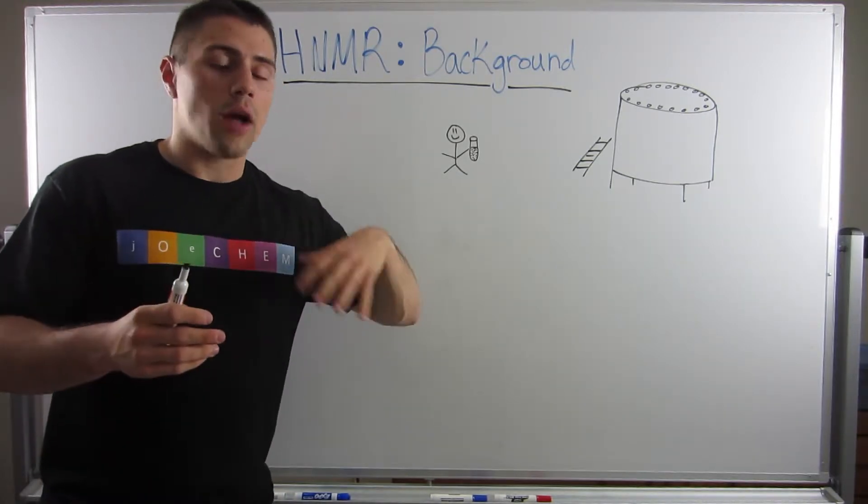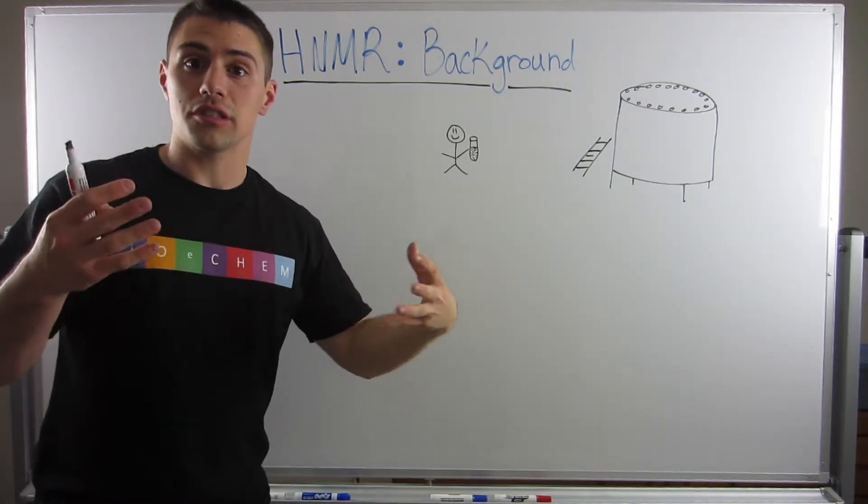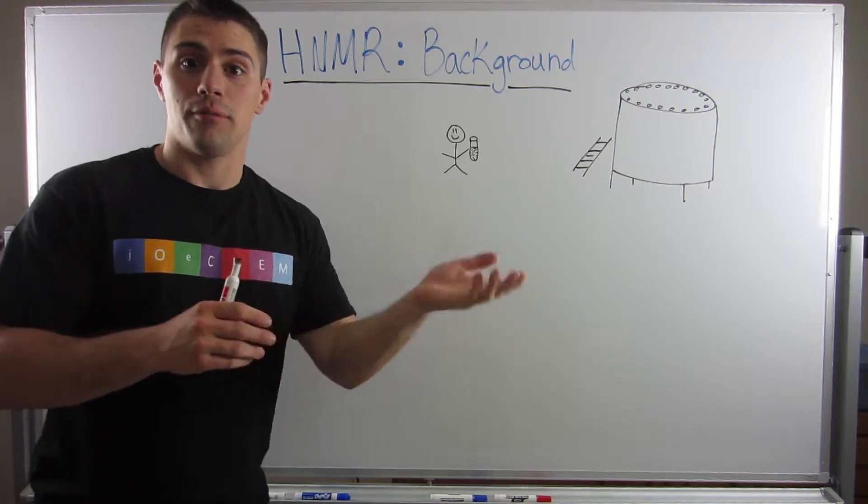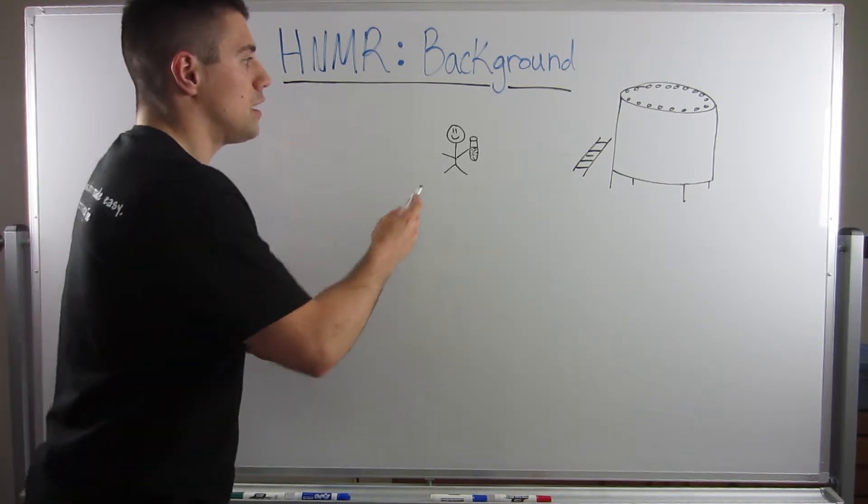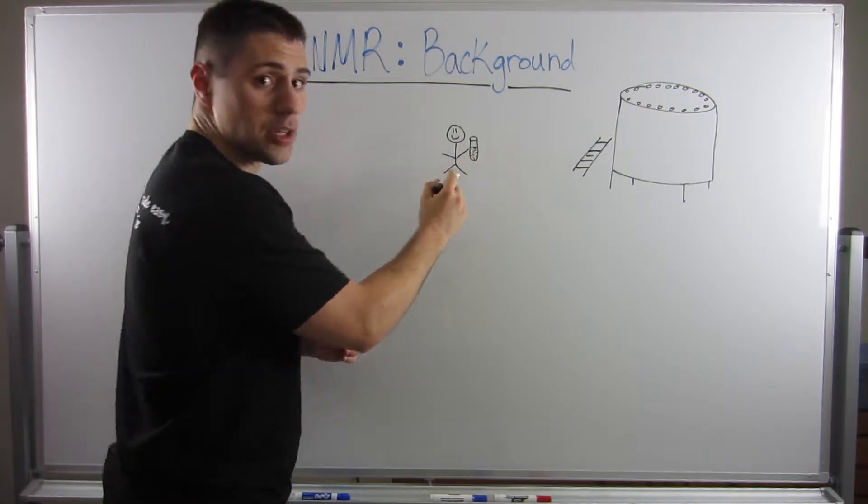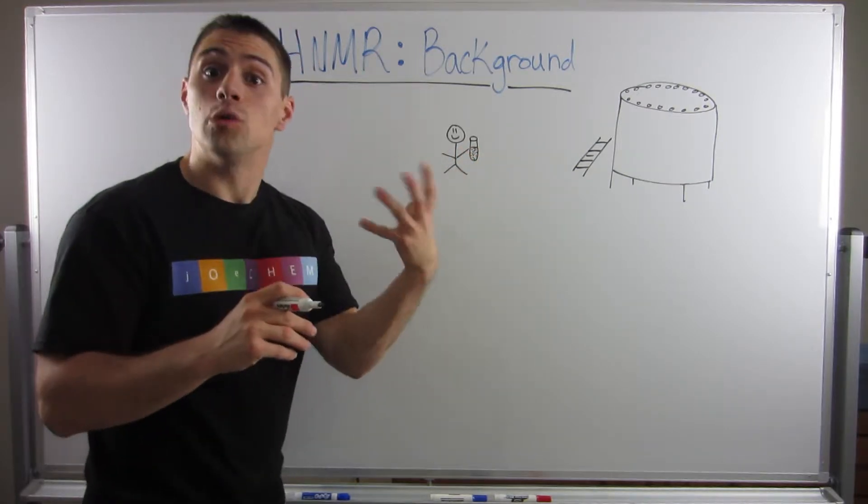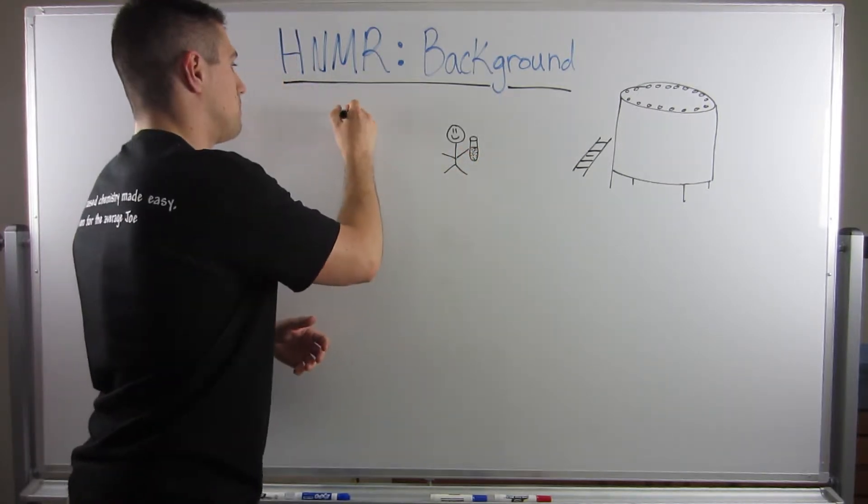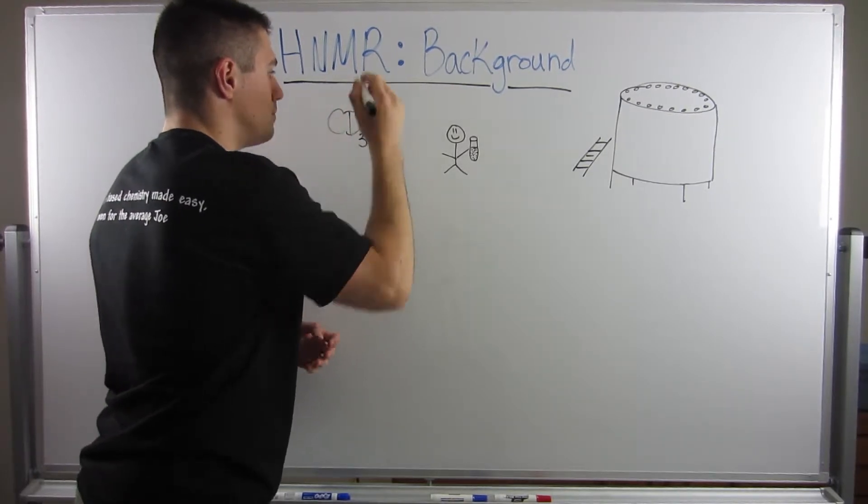He wants to make sure, hey, I want to see what my structure looks like of my physical sample so I can actually figure out did my work actually work. So he has a little test tube. That's a liquid that you dissolve with a known solvent. Usually it's this solvent right here.